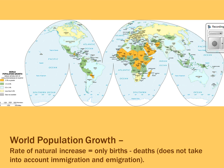Rate of natural increase is a calculation you need to know. It's births minus deaths, then divided by 10 to get the rate. Natural increase by itself is just births minus deaths; if you want the rate, divide by 10. It does not take immigration into consideration but is a good indicator of how quickly a population might increase.